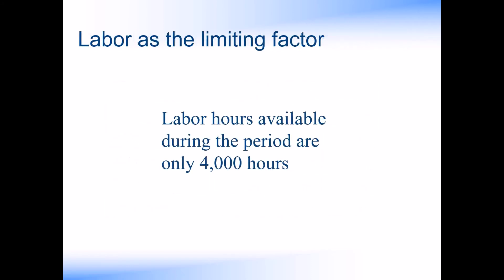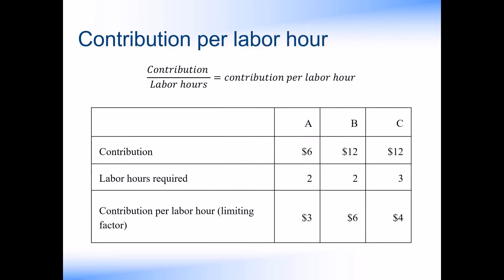Remember, due to COVID-19 lockdown restrictions, we only have 4,000 hours available in the period. As it is the labour hours that represent our limiting factor, we need to calculate the contribution per labour hour for each product. We can take our contribution and simply divide it by the number of hours required to produce each product.